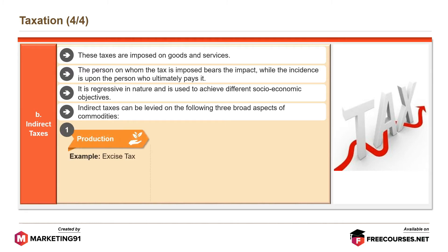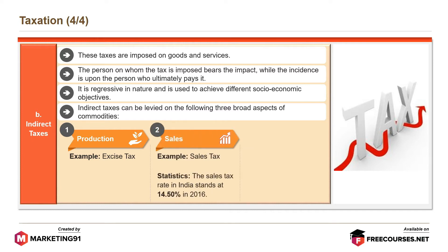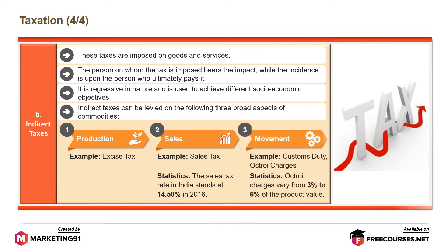Indirect taxes can be levied on three broad aspects of commodities: production, for example excise tax; sales, for example sales tax — the sales tax rate in India stands at 14.50% in 2016; and movement, for example customs duty and octroi charges — octroi charges vary from 3% to 6% of the product value.